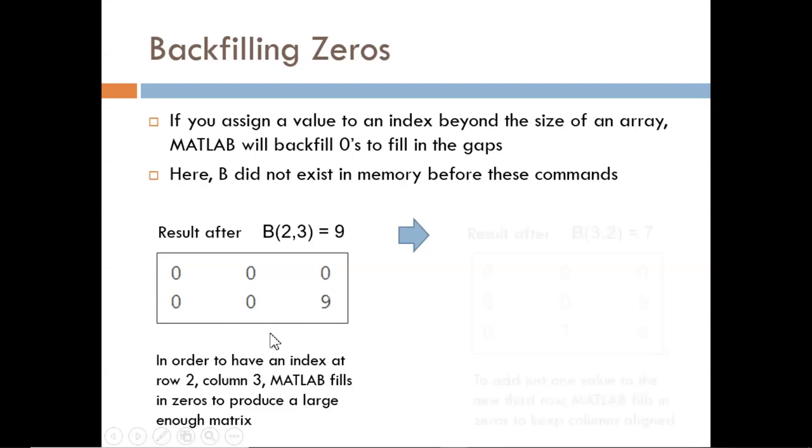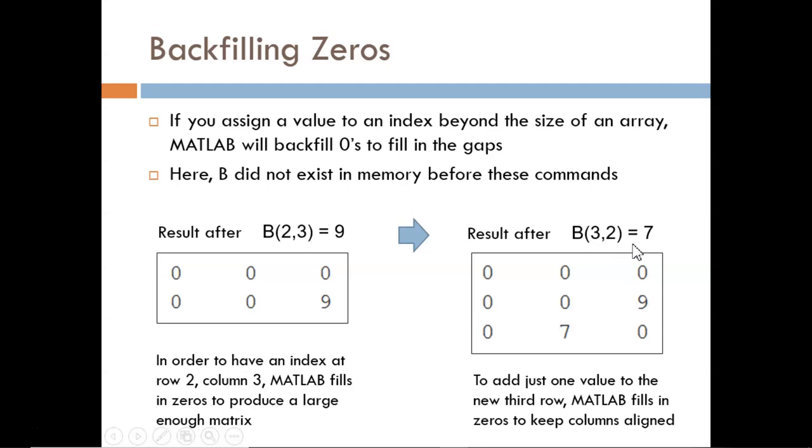The next command is b(3,2) = 7. The trouble is that a third row doesn't yet exist. So, MATLAB inserts a third row of all zeros with enough columns to match the rest of the matrix, and then the 7 can be filled in to the correct index. Not many programming languages can handle this automatic adapting. We should be thankful for MATLAB's capabilities.